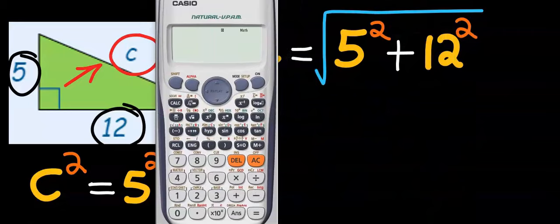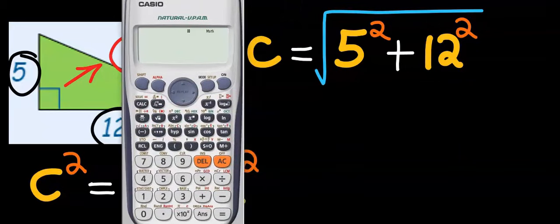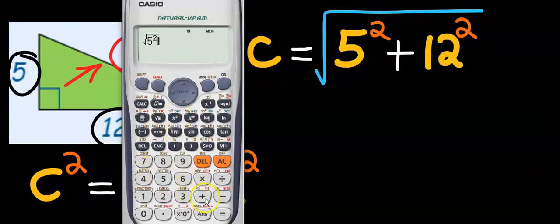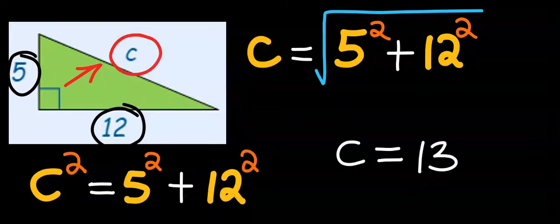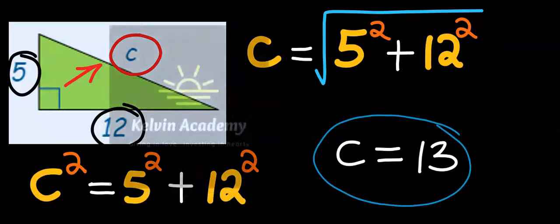What we need to do here is to type the square root of 5 squared plus 12 squared, and we are going to get 13. So c is equal to 13.